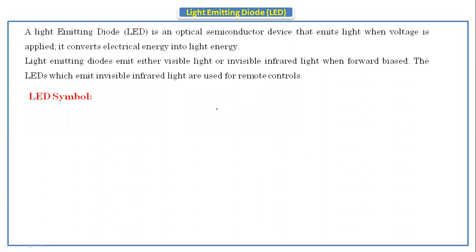If you see the LED symbol, this is the symbol of the LED which has the anode as well as the cathode. This is the light emitting symbol with two arrows. In between it looks like a normal PN junction diode only.